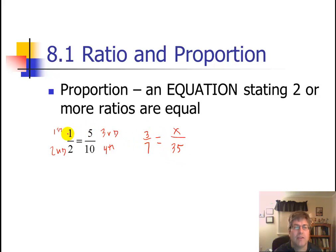We can cross multiply the means and the extremes. The means are generally the middle numbers, and the extremes would be the high and the low. So if you look at 1 half and 5 tenths we see 1 and 10 would be the extremes where 2 and 5 would be the means.